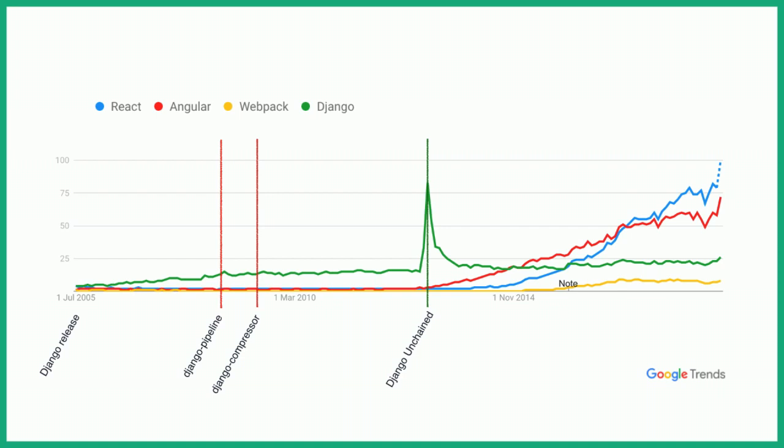Around the same time, you can see Angular and then a couple of years after, React — the most common modern frameworks — coming out around 2012-2014. Those frameworks need a much more potent build pipeline. They need integration with JS packages, they need to pull in dependencies from npm, they need to be able to work with image files, font files, CSS, etc. So that's where Django Pipeline and Django Compressor weren't enough anymore, and the front-end community came up with webpack, which solves all of these problems.